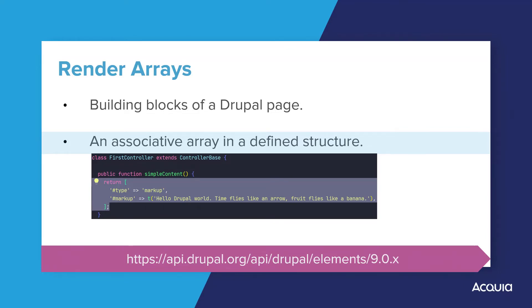Just a quick note of difference: although render arrays and arrays used by Form API do share elements, properties, and structure, many properties on form elements only have meaning for the Form API, not for the render API. What this means practically is that you need to declare your form arrays in the correct place in code or they do not have meaning to other systems.